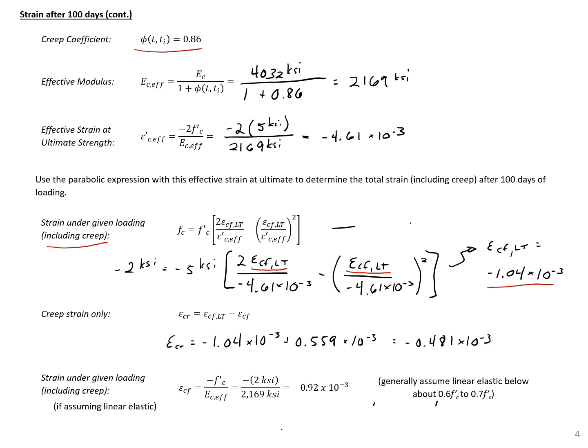That's our creep strain only and our total long-term strain. We can also compare this to what we'd find using a linear elastic expression, and we'll see we're within about 10%. Generally, we can assume linear elastic behavior up to about 60 to 70% of ultimate strength. The difference with long-term is a little larger than with short-term. That concludes this example.